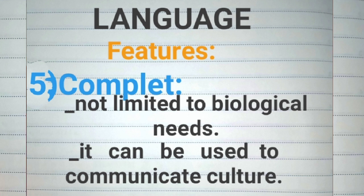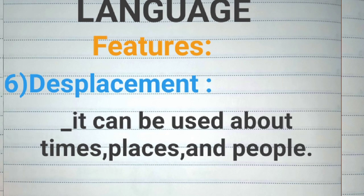Number five, language is complete. The use of human language is not limited to biological needs; it is more complete in that it can be used to communicate about the culture of its native speakers. Number six, displacement is the ability to use language to talk about times, places, and people other than the here and now.